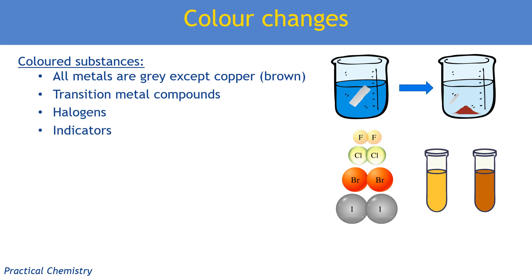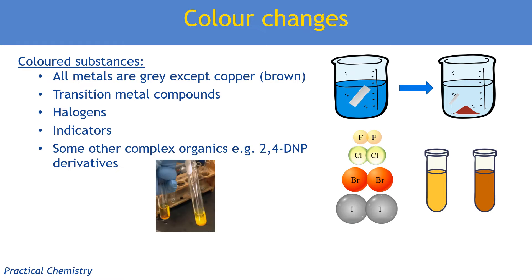You've also got indicators, acid-base indicators, but also starch used as an indicator for iodine. And indicators are organic molecules. And there are some big, complicated organic molecules that are coloured. So if you've done aldehydes and ketones, you'll have come across Brady's or 2,4-DNP and you'll know that that gives you really bright yellow-orange precipitates. However, this is quite a niche area. You wouldn't be expected to look at an organic compound and know that it's coloured unless you're doing OCR B, in which case they do talk about that a little bit more.